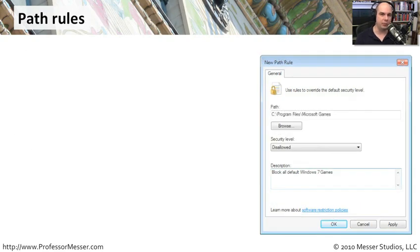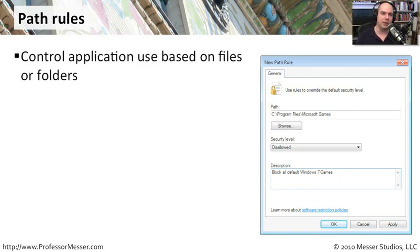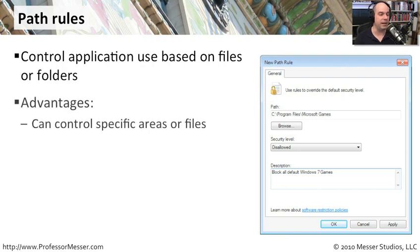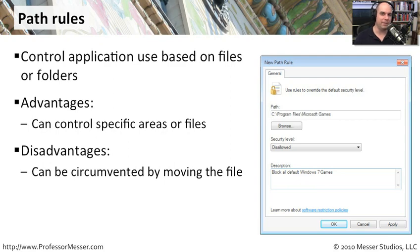The next rule type is the path rule. As the name implies, it allows or disallows applications based on where they reside on your computer or a server — a specific directory or file location. This gives a lot of control for entire directories, but it has a limitation: if a user moves the executable to another folder that is allowed, they can still run it. So be aware that a smart user who can move files could bypass path rules.